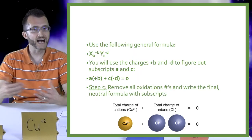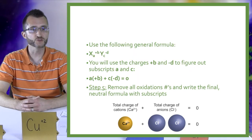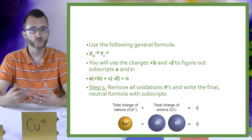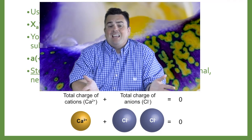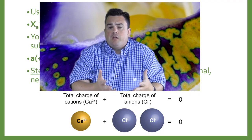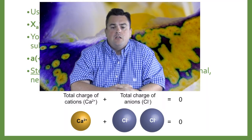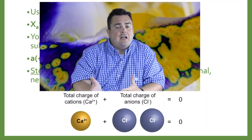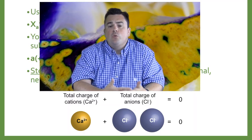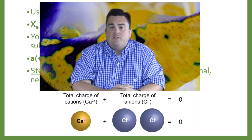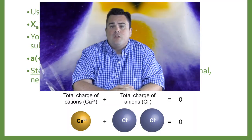Step five: remove all oxidation numbers and write the final neutral formula with subscripts. Looking at the image below, we've got calcium with a +2 oxidation state. To balance that out, chlorine only has a −1, so we would need two of them to balance out that +2 to get to zero.